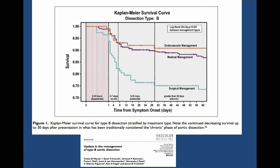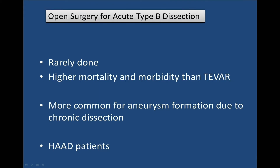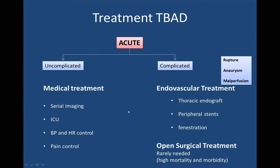Looking at survival data in patients with acute type B dissection stratified by intervention type, there is a huge difference in outcome. Medical management covers essentially uncomplicated type B dissection, TEVAR versus surgical management. This is the reason why open repair is rarely done in most centers today — it has higher morbidity and mortality compared with TEVAR. Open repair is more commonly performed in chronic aneurysms from chronic type B or type A dissections, and in patients with inherited aortopathy. The basic algorithm is: uncomplicated — medical therapy; complicated — medical therapy plus usually endovascular therapy, and sometimes open surgery.